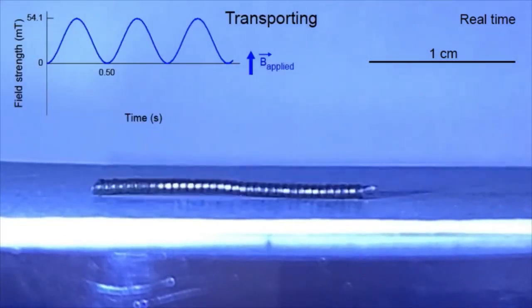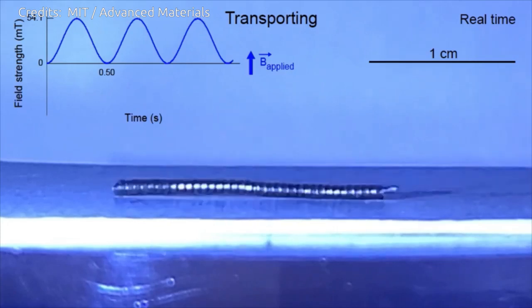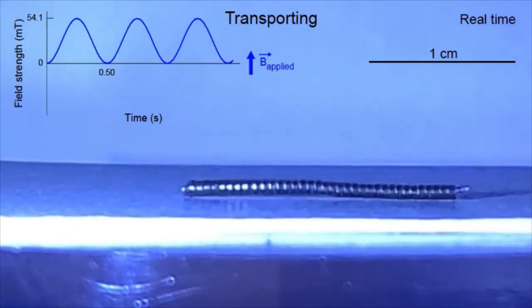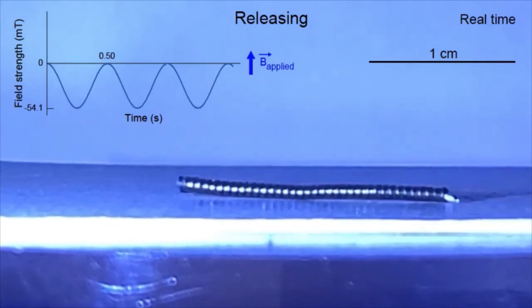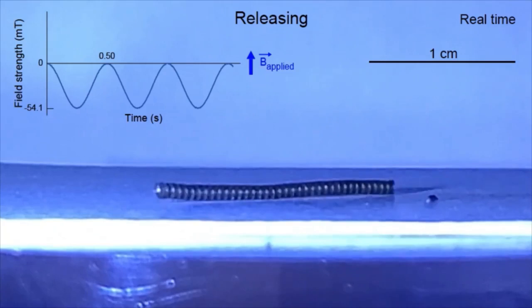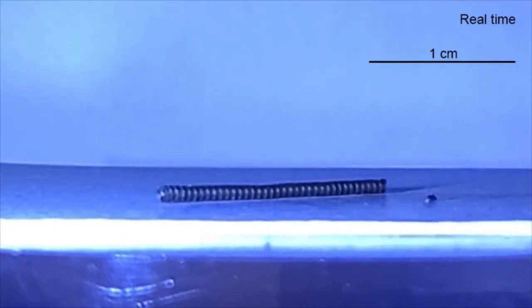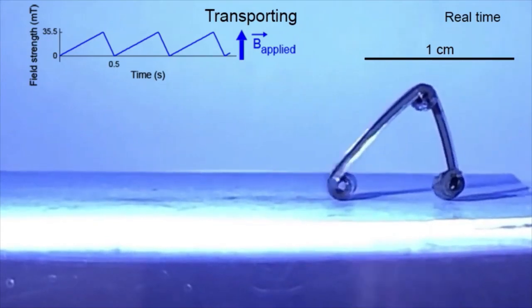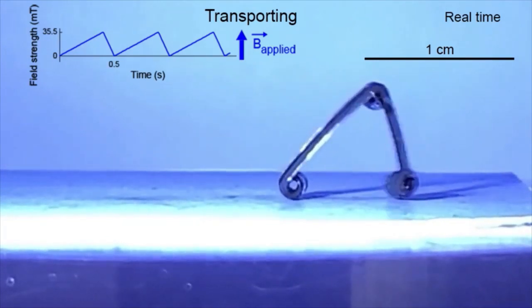Until now, magnetic robots have moved in response to moving magnetic fields. For these models, if we want the robot to walk, the magnet walks with it. If we want it to rotate, we rotate the magnet. That limits the settings in which such robots might be deployed. If you're trying to operate in a really constrained environment, a moving magnet may not be the safest solution.